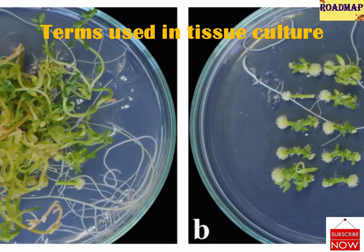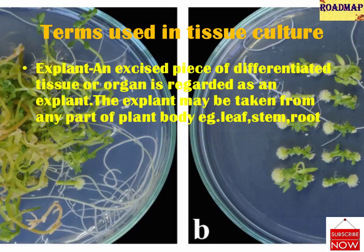There are some terms used in tissue culture. Explant: an excised piece of differentiated tissue or organ is regarded as an explant. The explant may be any part of the plant body — that is, leaf, stem, or root.